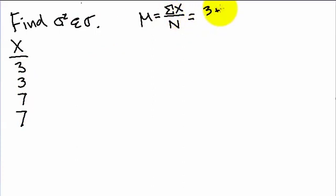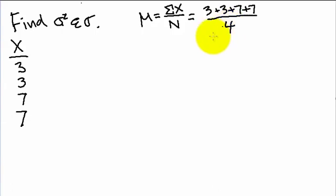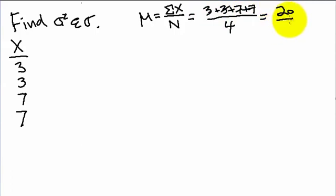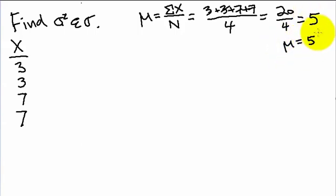We add up these values: 3 plus 3 plus 7 plus 7 over 4, since we have four values. Adding these up: 3 and 7 is 10, 3 and 7 is 10, so that's 10 plus 10 or 20 over 4, which is equal to 5. So the mean here is equal to 5.